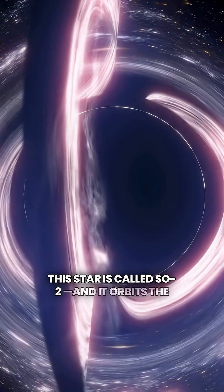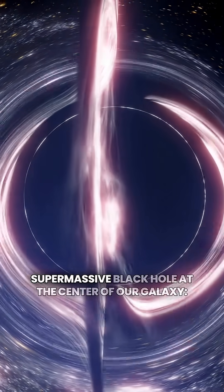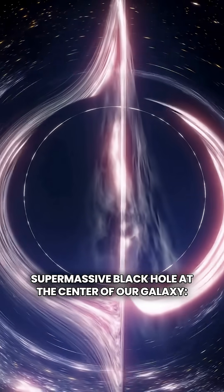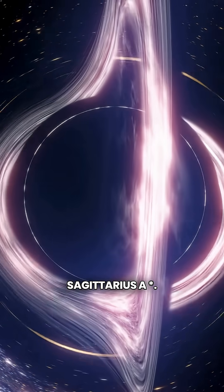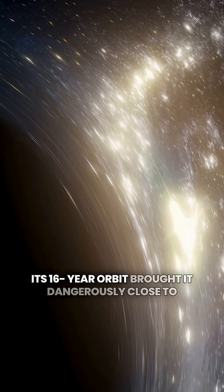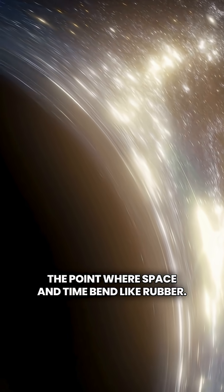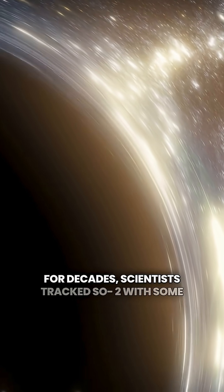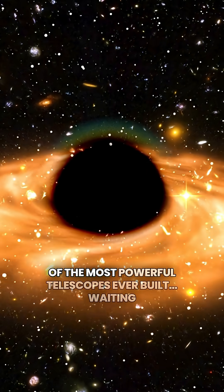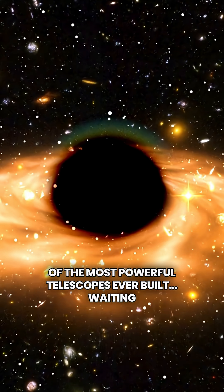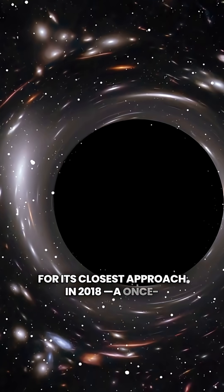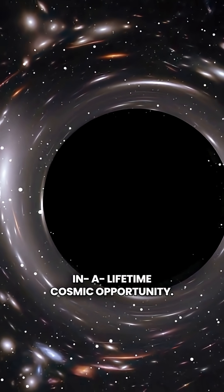This star is called SO2, and it orbits the supermassive black hole at the center of our galaxy, Sagittarius A. Its 16-year orbit brought it dangerously close to the point where space and time bend like rubber. For decades, scientists tracked SO2 with some of the most powerful telescopes ever built, waiting for its closest approach in 2018, a once-in-a-lifetime cosmic opportunity.